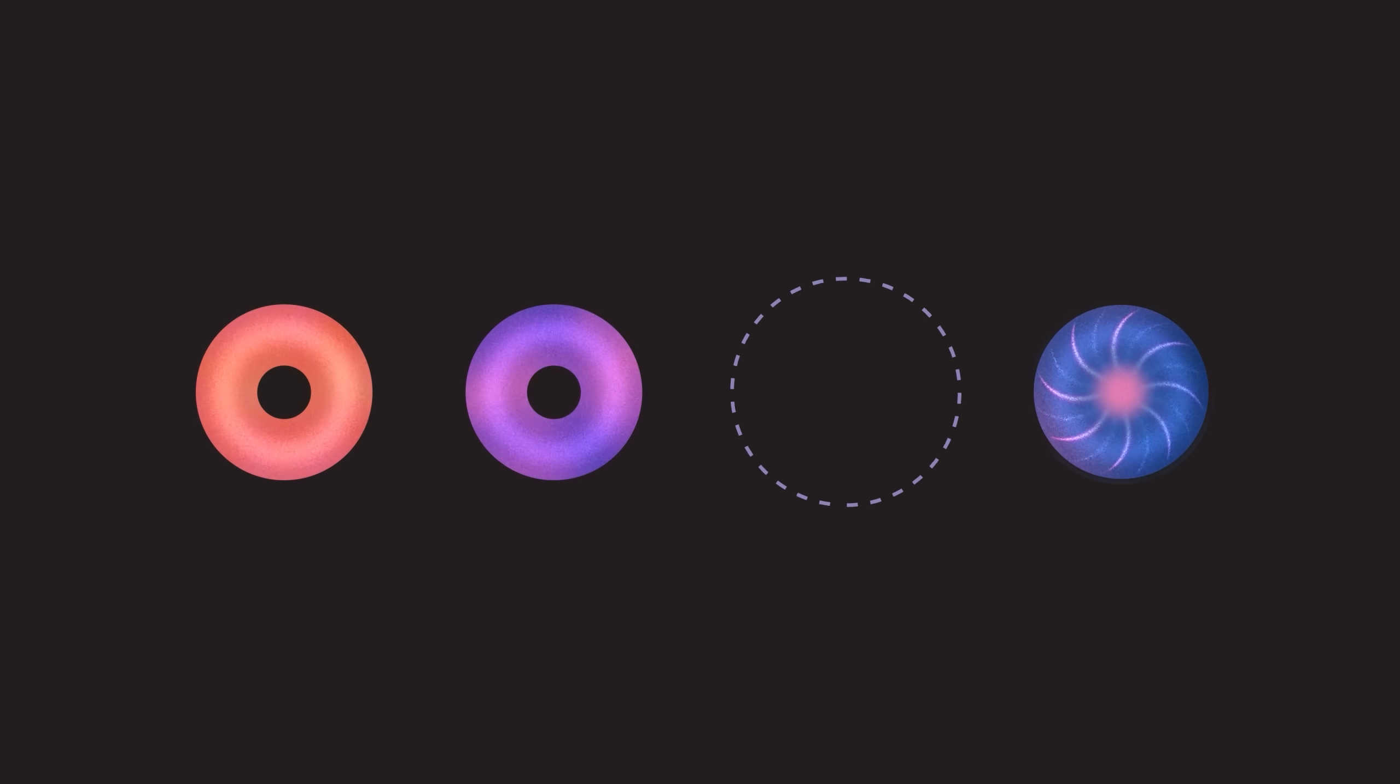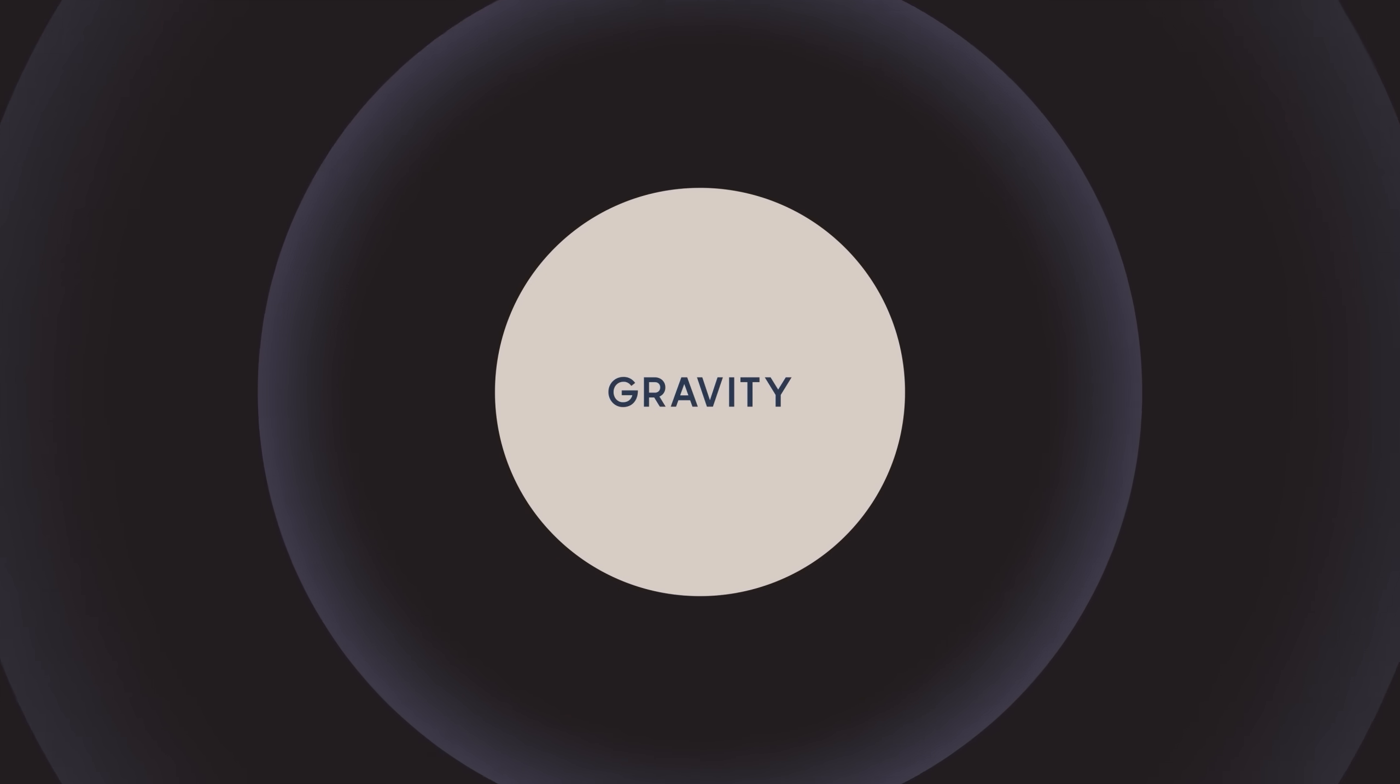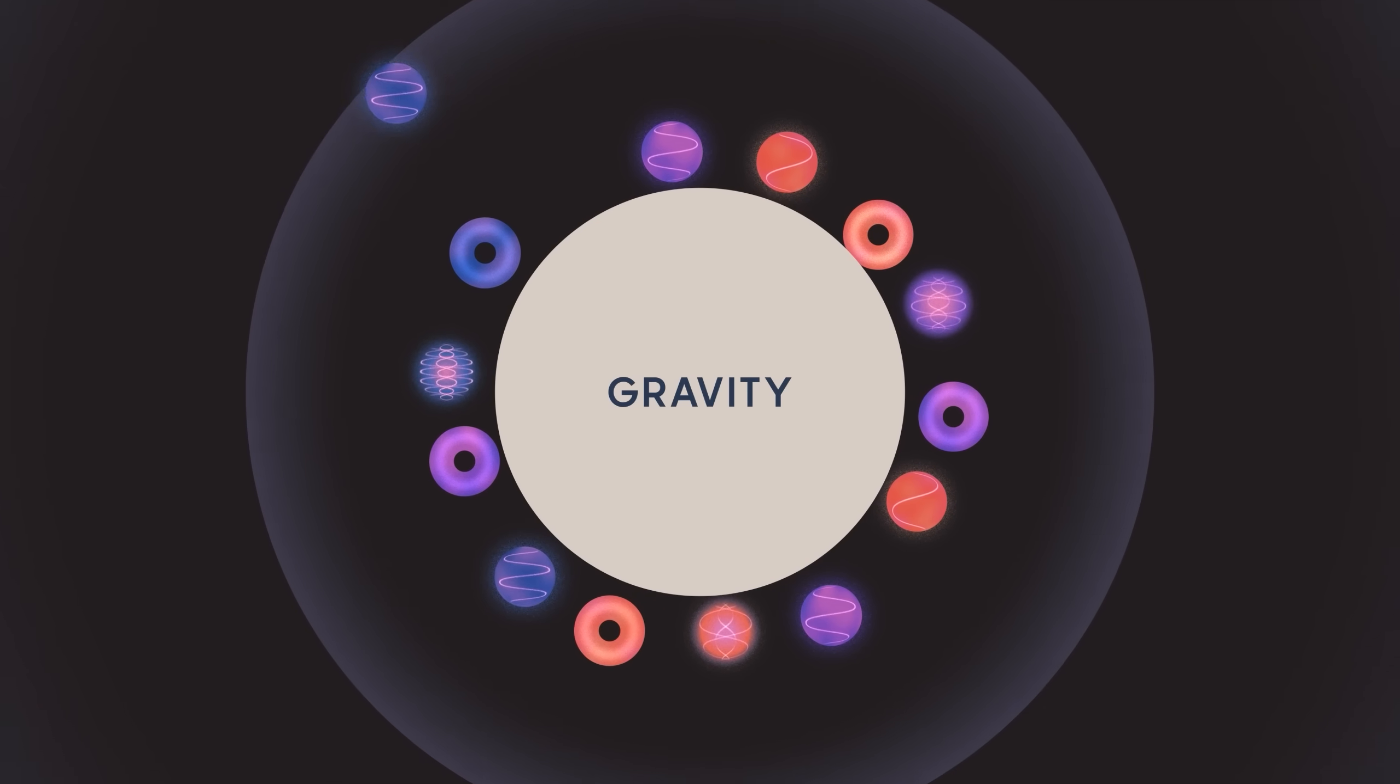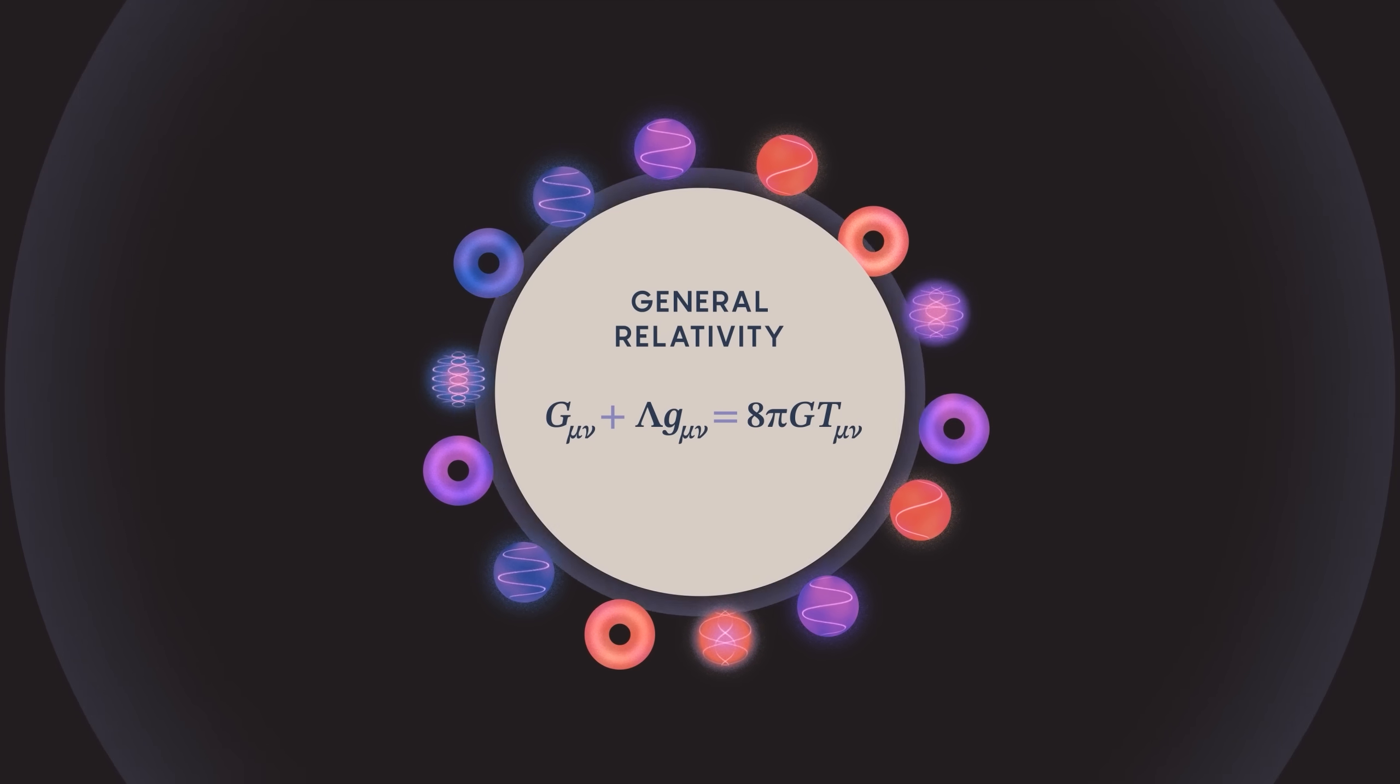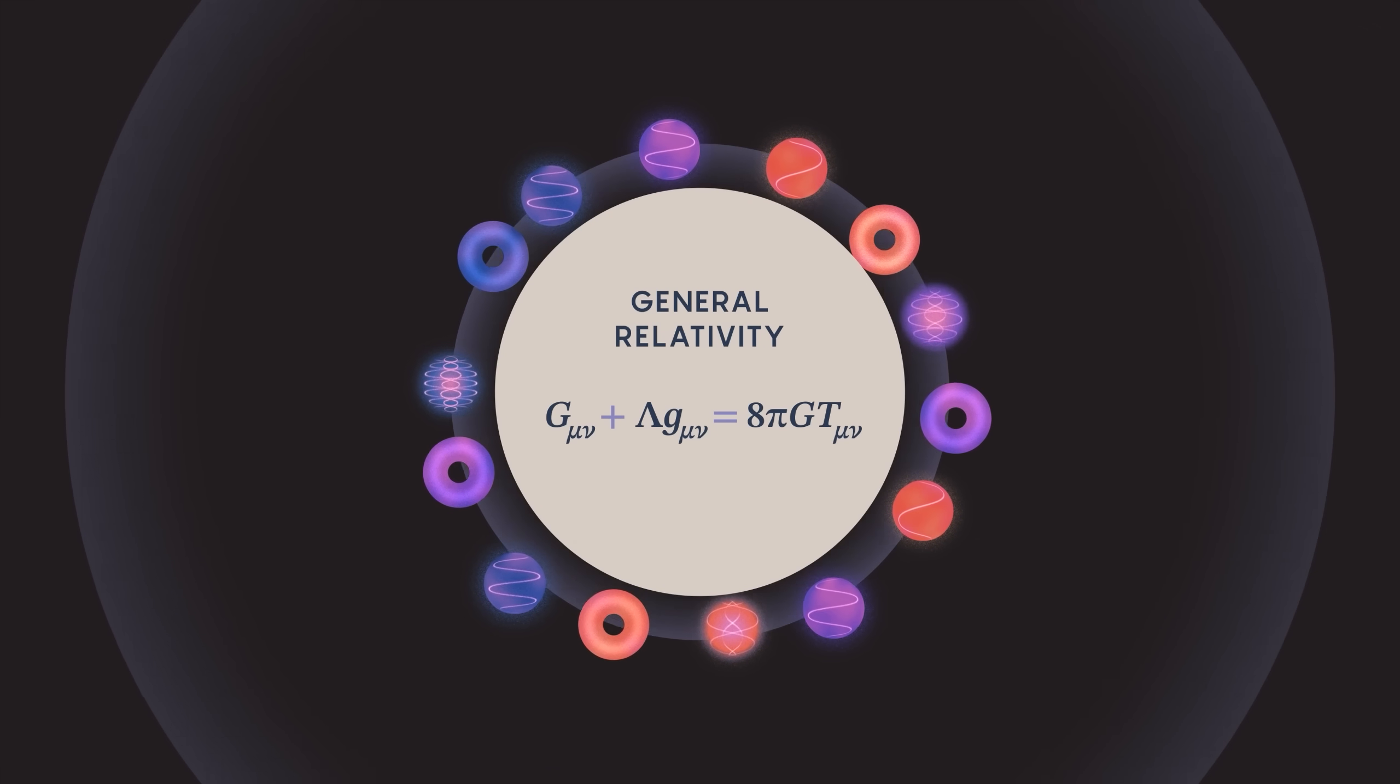Before we get going, some caveats. First, I said three forces, while there are actually four fundamental forces at play in the universe. This means there's something missing from this picture. And that something would be gravity, the most obvious force at play in the world around us, and yet, in many senses, the one that we understand least. We do have a theory of gravity, a very successful theory. It was given to us by Albert Einstein and it goes by the name of General Relativity. But there are two good reasons why it's not included in the Standard Model.